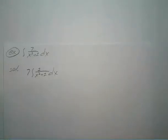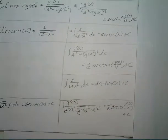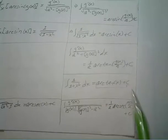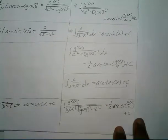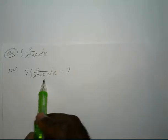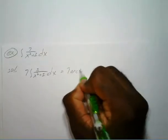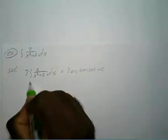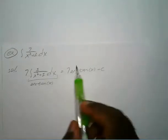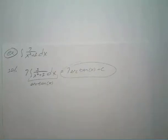The reason I was digging back in my papers is because if you remember from the first video, the integral of 1 over 1 plus x squared with respect to x is equal to arctangent of x plus c. So here, 7 times that integral is just equal to 7 arctangent of x plus c. So that one was pretty straightforward.